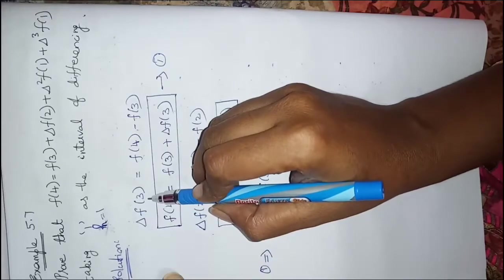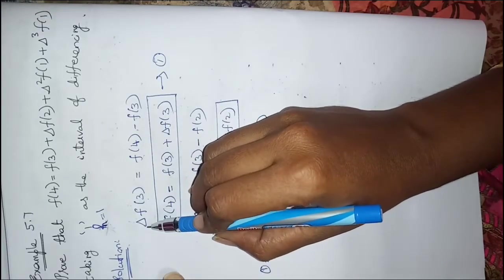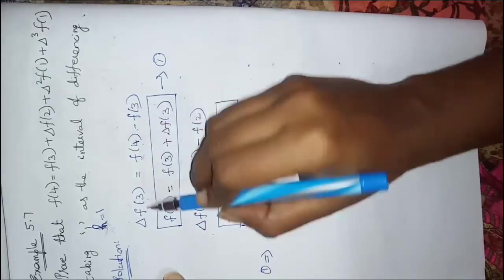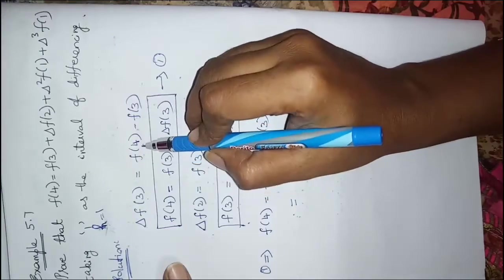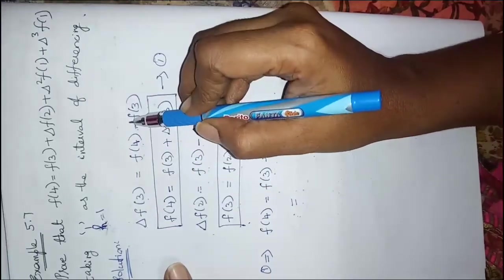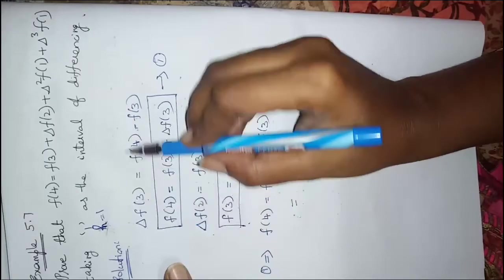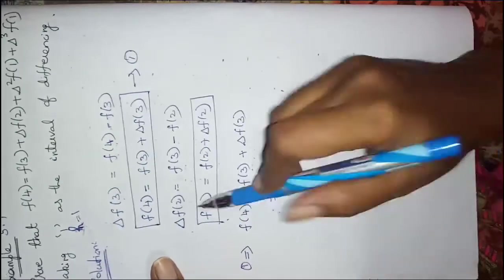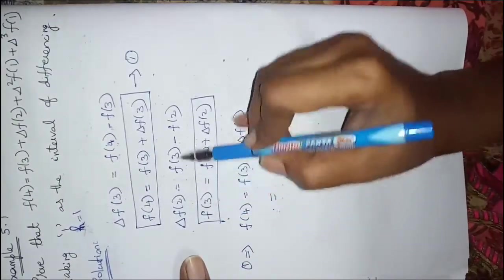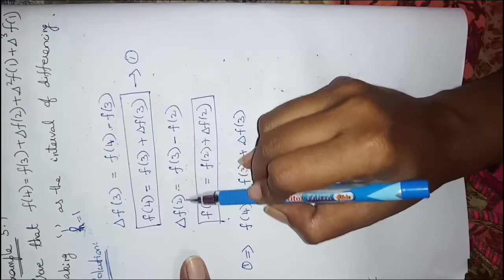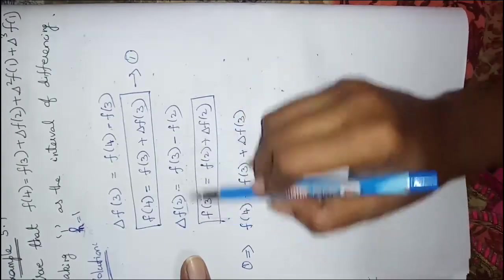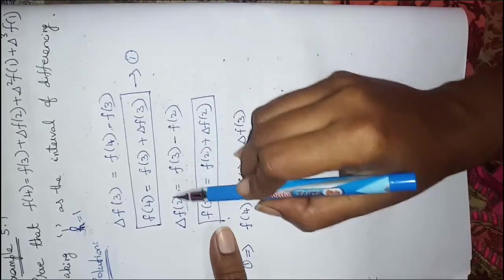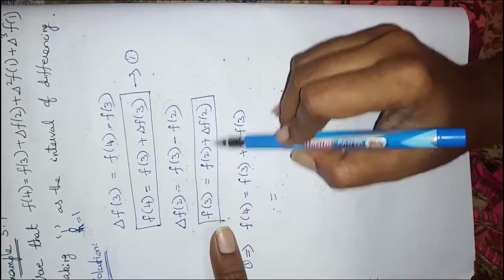I will take first Δf(3). Using the forward difference operator formula — forward difference equals forward function minus original function — so f(4) minus the original function gives us f(4). Moving f(3) to the left hand side: f(3) + Δf(3) = f(4). Then Δf(2) equals forward function minus original function, which is f(3) minus f(2). From this, f(3) = f(2) + Δf(2).